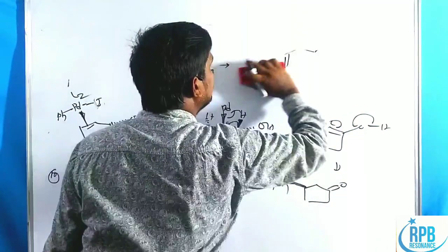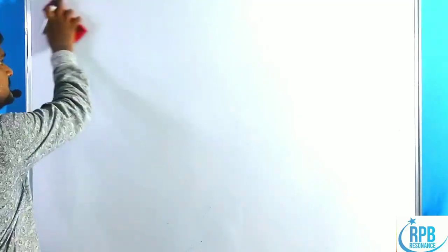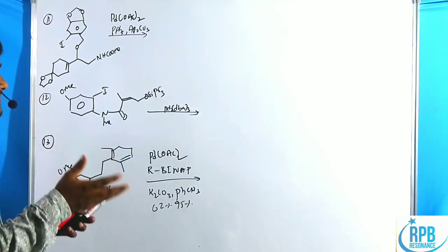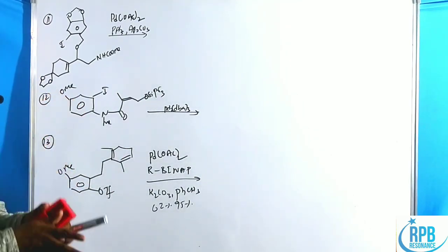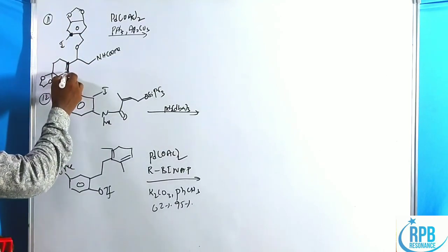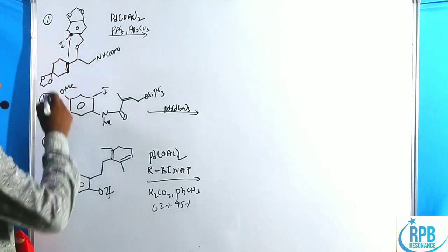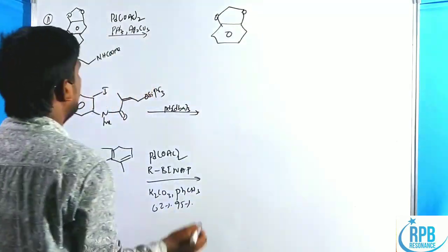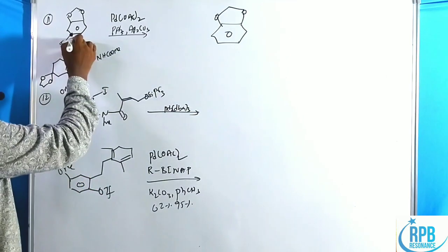Now let us discuss the very important final reactions in this lecture. These are all intramolecular Heck cross-coupling reactions. Intramolecular means within the molecule, forming a vinyl-to-aryl halide bond — new C-C bond formation. We need to find the aryl halide group and the favorable vinyl position. In the case of di- or tri-substituted alkenes, the coupling reaction forms the bond favorably.